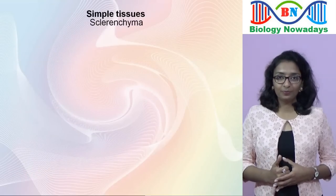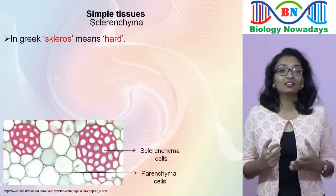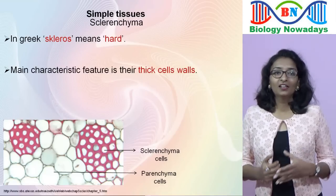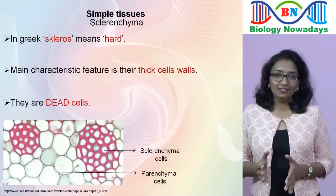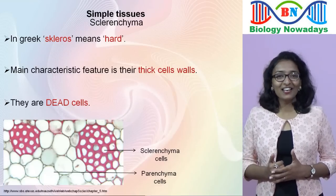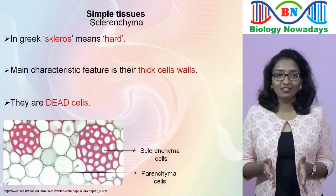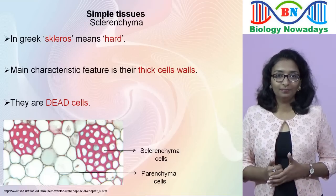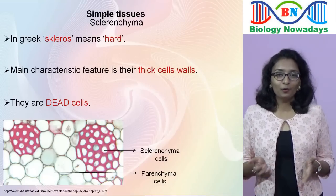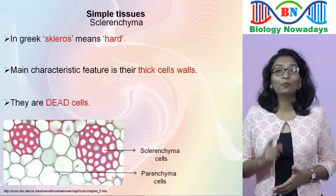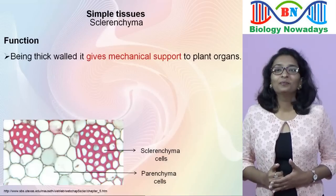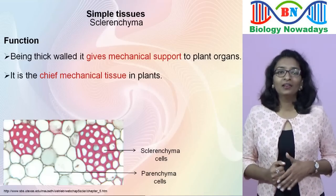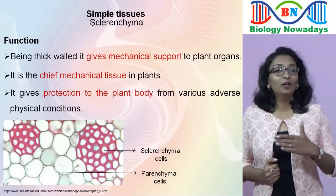Finally, the sclerenchyma tissue. The term sclerenchyma is derived from the Greek word 'scleros' meaning hard, and the main characteristic of sclerenchyma cells is their thick cell walls. Sclerenchyma tissue consists of thick-walled dead cells, meaning the protoplasm or living content of the cell is absent. So the cell cavity or lumen is usually empty. Since there is no protoplasm, sclerenchyma has no many functions except one important one: being thick-walled, it gives mechanical support to plant organs. It is the chief mechanical tissue in plants and gives protection to the plant body from various adverse physical conditions.